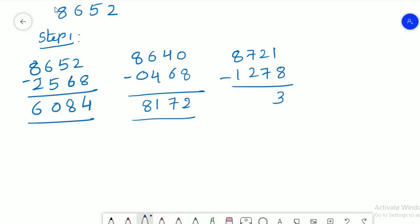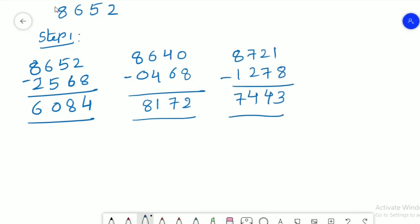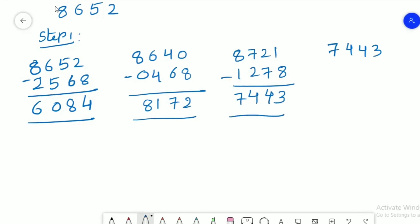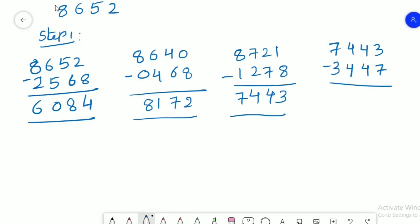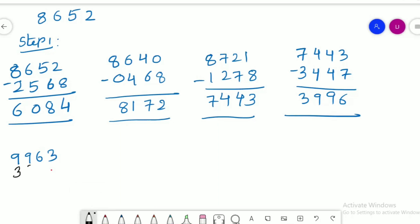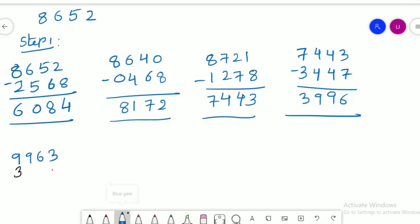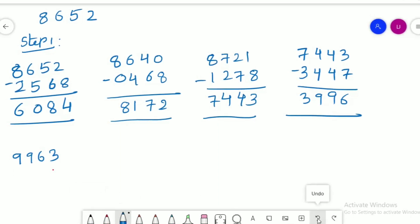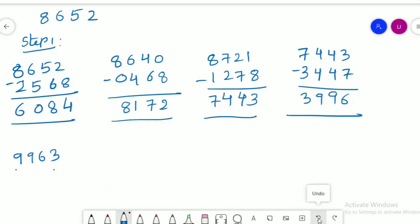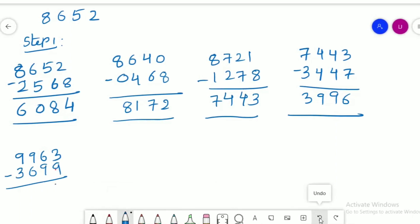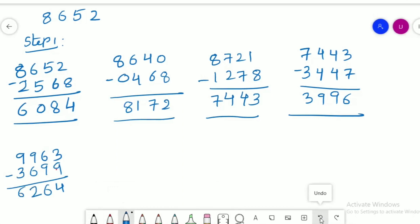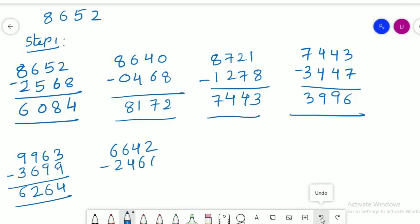And step three, 7443. Okay, now I am doing it again. Okay, now the answer is 3999. Alright, I am repeating this process. Okay, instead of five, the answer is 6264. So I will repeat this.